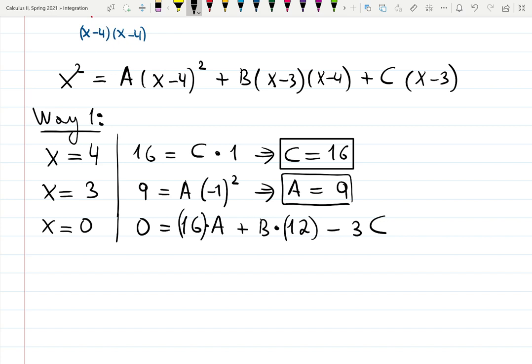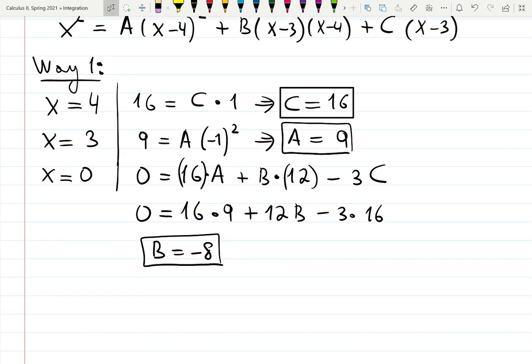But we know A and C. So let's rewrite it. A is 9, 16 times 9. We don't know B. So 12B. But we know C, minus 3 times 16. And that's how we can solve for the last unknown B. B is minus 8. I just checked my notes. So we have 9, minus 8, and 16.